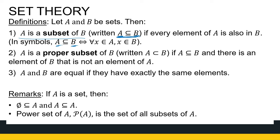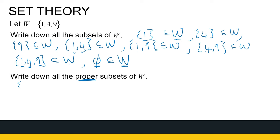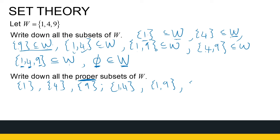Now looking at a proper subset — a proper subset is a slightly stronger definition. A is a proper subset of B if it's firstly a subset, and there's at least one element in B that's not in A. So looking at set W = {1, 4, 9}: {1} is a proper subset of W because it's a subset of W and there's still something in W that's not in {1}, namely 4 and 9. Similarly, {4} and {9} are proper subsets. {1,4}, {1,9}, and {4,9} are all proper subsets of W.